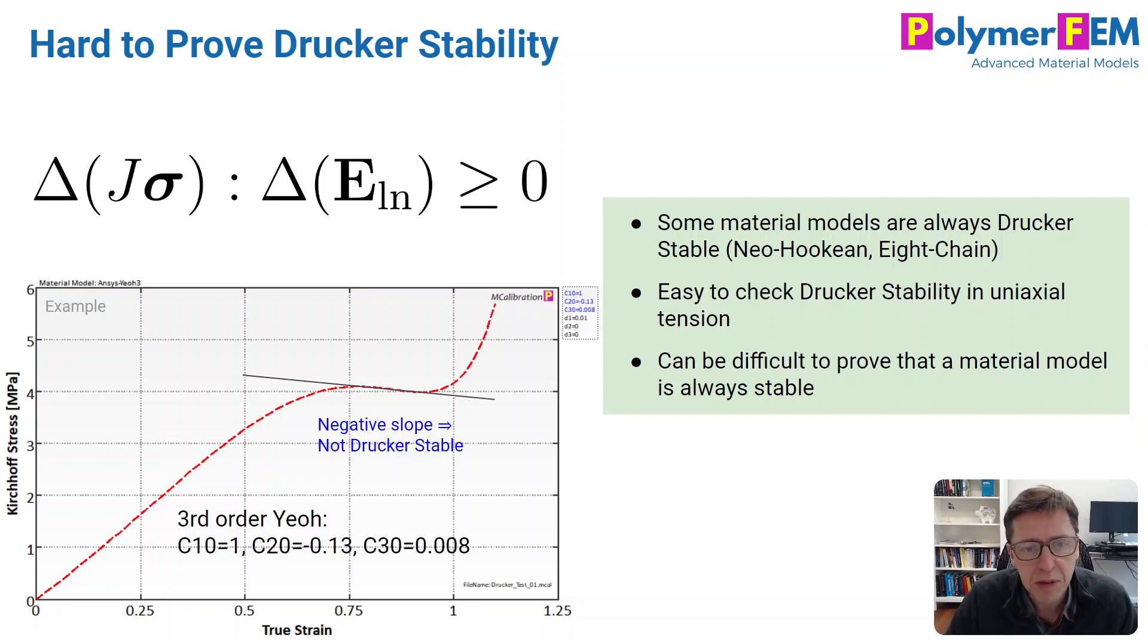It turns out that there are some material models, some simple material models, like the Neo-Hookean, the Arruda-Boyce 8-chain model, that are always stable and always satisfy this condition. But some of the other material models don't satisfy this automatically. And what you do in the case like that is that you may want to consider the possibility that the material model you have calibrated is not going to be Drucker stable.